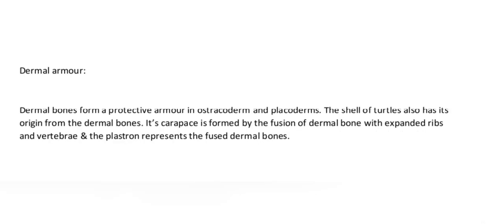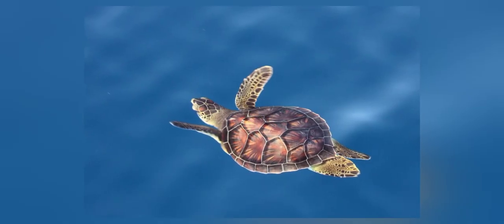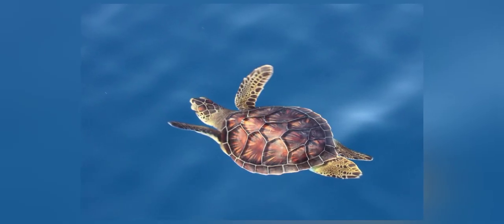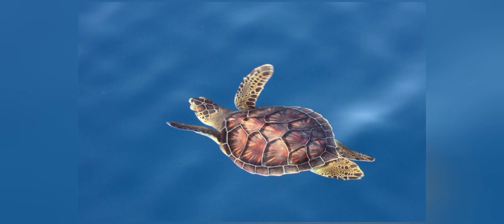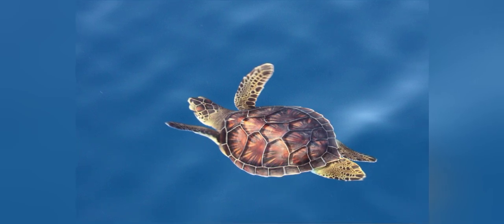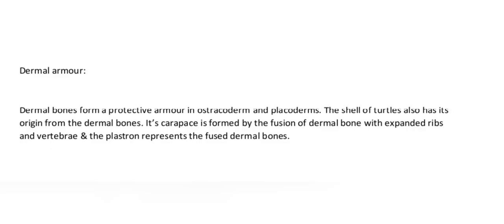Dermal armour: dermal bones form a protective armour in ostracoderms and placoderms. The shell of turtles also has its origin from the dermal bones. Its carapace is formed by the fusion of dermal bone with expanded ribs and vertebrae, and the plastron represents the fused dermal bones.